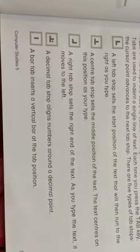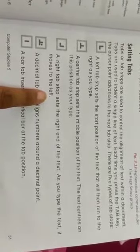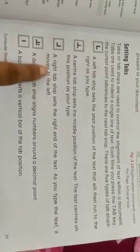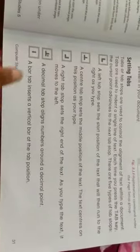The opposite of 'L' is the right tab stop: a right tab stop sets the right end of the text. This was the left tab stop where the cursor moved to the right; here in the right tab stop the cursor moves to the left, while the center tab stop keeps text in the middle. Next, the opposite of 'T' with a dot — a decimal tab stop — aligns numbers around a decimal point; whether it is a decimal or a point, the text stops there. Finally, a bar tab inserts a vertical bar at the tab position.